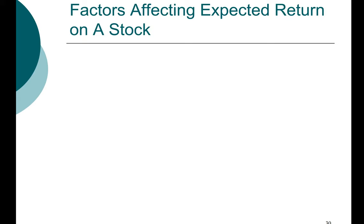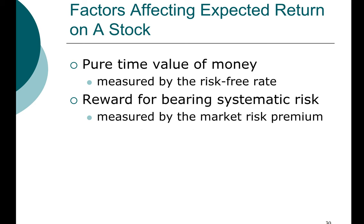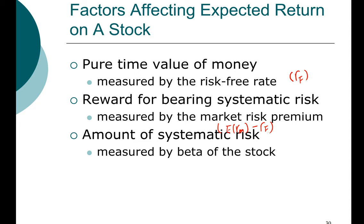To summarize, the factors that affect the expected return on a stock are: first, the pure time value of money, which is the risk-free rate (Rf); second, the reward for taking risk, measured by the market risk premium (expected return on the market minus Rf); and third, the amount of systematic risk, measured by the beta of the stock. Congratulations — you have completed this module.